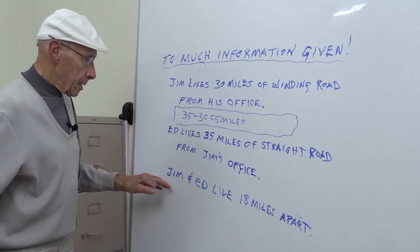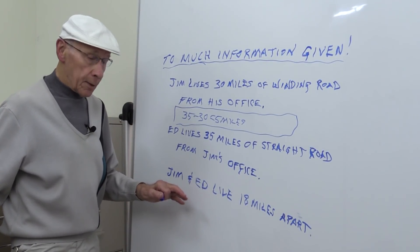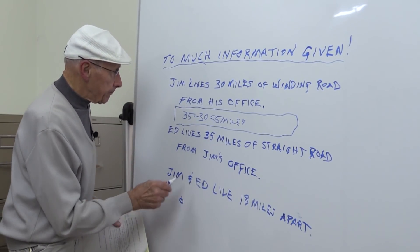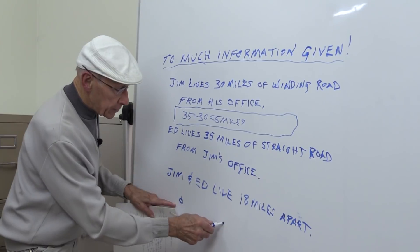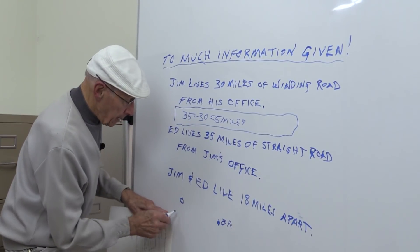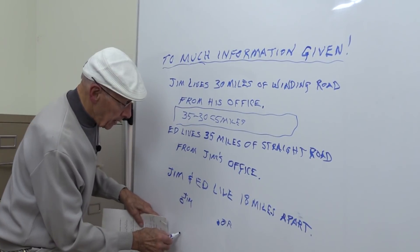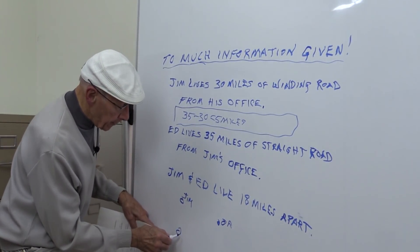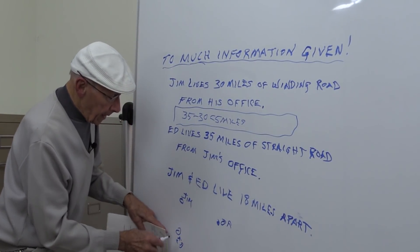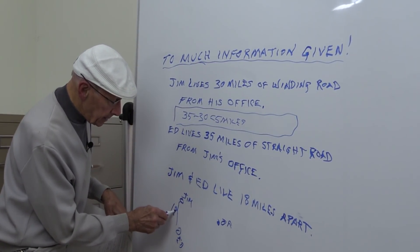But what about this? Jim and Ed live 18 miles apart — does that have any significance? Let's see. Let's suppose that Jim lives here, here's the office, and this is Jim. Ed lives 5 miles further, so he's right here — this is Ed. And they live 18 miles apart, so this is 18 miles apart.